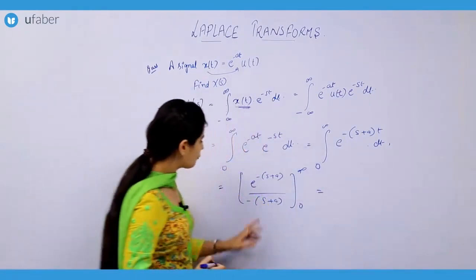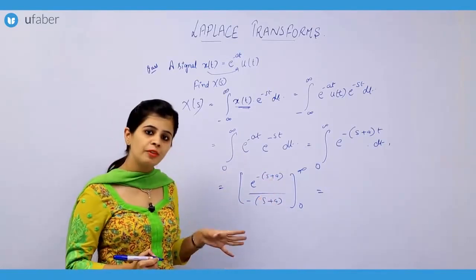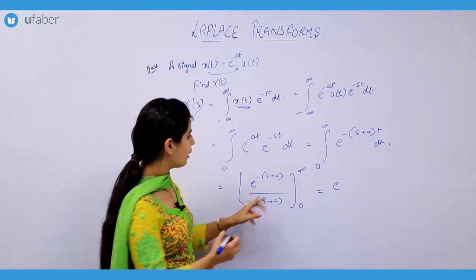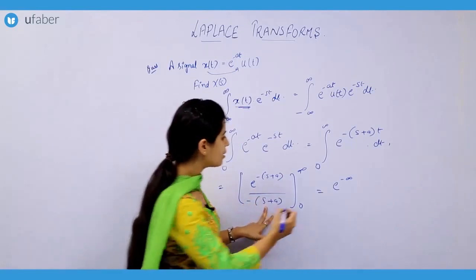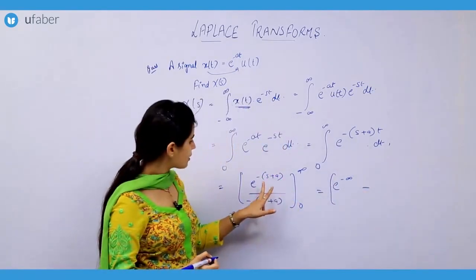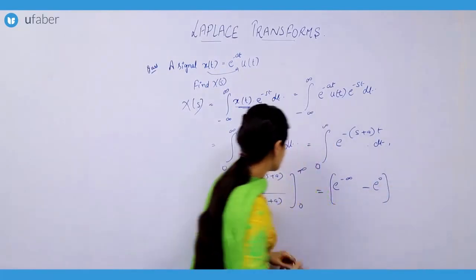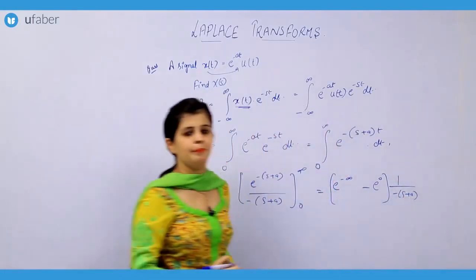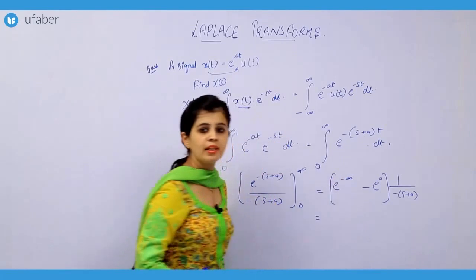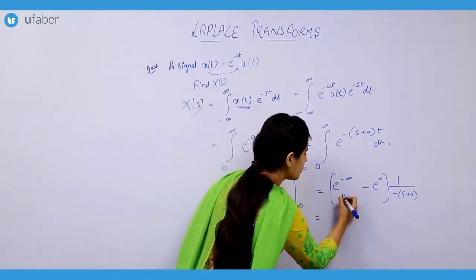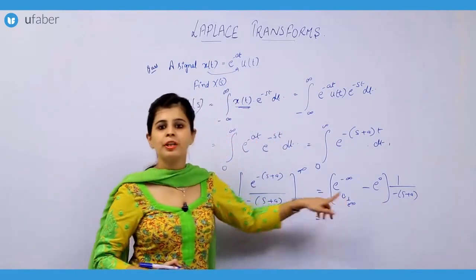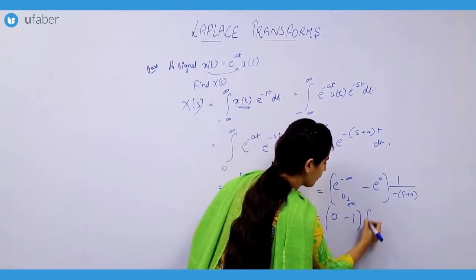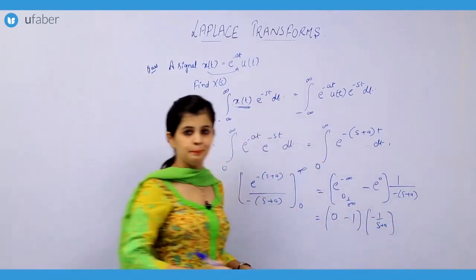Now I just have to substitute the values of the limits. For the upper limit, we get e raised to the power minus infinity; for the lower limit, e to the power 0; and outside we have the constant 1 upon minus of (s plus a). We know that e to the power minus infinity becomes 0 — since it equals 1 over e to the power infinity, and 1 over infinity is 0. So it becomes 0 minus 1, times 1 upon minus of (s plus a).